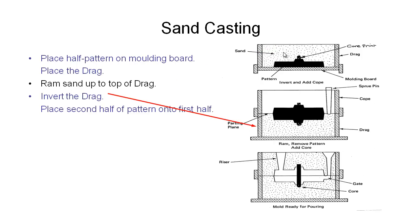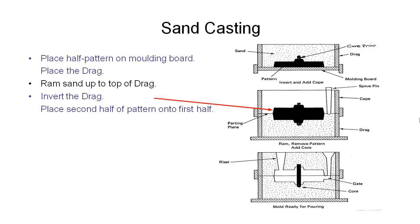Once we've done that, we actually flip the whole thing upside down, put it on the table, and take off the mounting board. So in the middle image here, we've actually turned this upside down — this is another mounting board or a table — and then we can remove the mounting board from the top. We then add the second half of our pattern onto the top of the first half so that we've now completed the cavity we're building for this part. Once we've got the second half of our pattern in place, we can add on what we call the cope — another square box which we put on top of the drag.